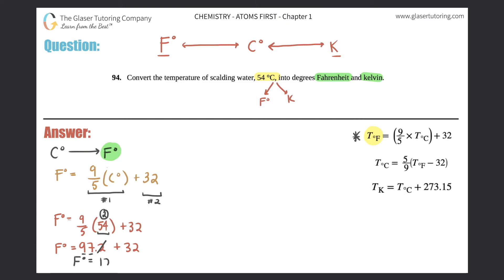And remember your addition sig figs. Your addition and subtraction sig fig rules are after the decimal. Since there was nothing after the decimal, it doesn't matter here. So this first one equals 129 degrees Fahrenheit. So that's the first one, 129 degrees Fahrenheit. So box that answer off. That's the answer to the first part.